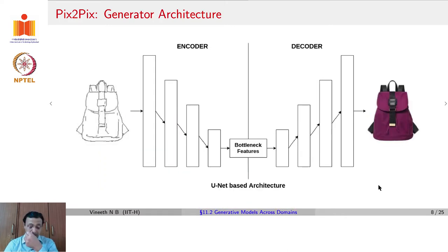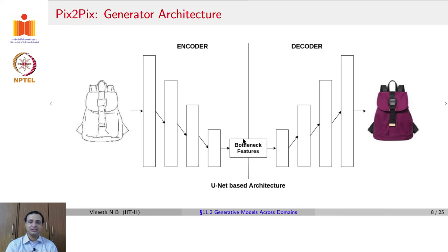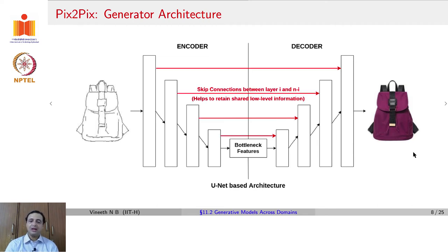The generator architecture in Pix2Pix resembles a U-Net based architecture, where there is an encoder that reduces the dimensions of the layers to go all the way to a set of bottleneck features, which are then upsampled to get the final dimension of the output image. Similar to U-Net, there are skip connections that go from each layer in the encoder to its corresponding mirror layer in the decoder, very similar to what we saw in U-Net for semantic segmentation.